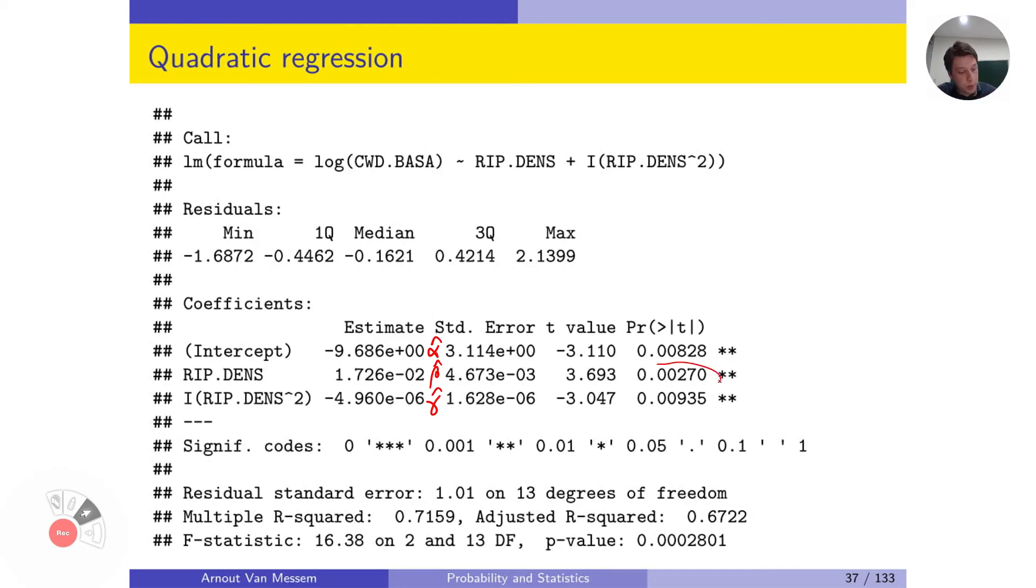The p-values here are still significant. So both beta hat and gamma hat are significantly different from zero. This means that both of them are supposed to be in the model and that our model is a significant model.